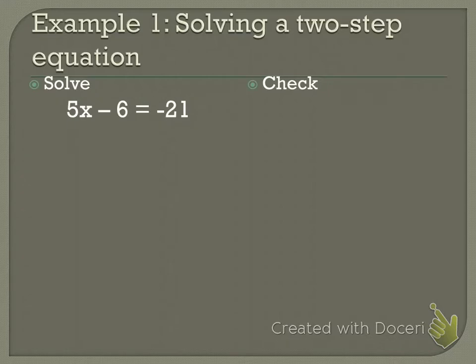Here's the process when I'm solving a two-step. The first thing I want to do is move the number that is not connected to my variable. Which number is not connected to my variable? Negative 6. How do I get rid of negative 6? I need to add 6. Whatever I do to one side, I do to the other.